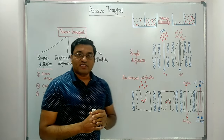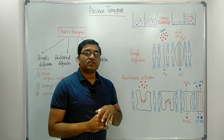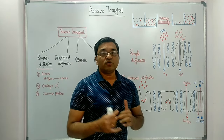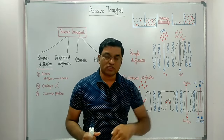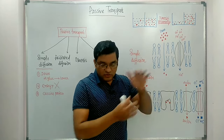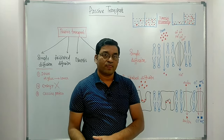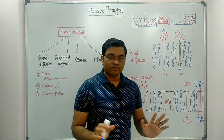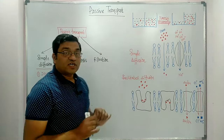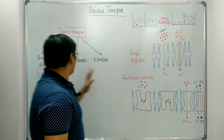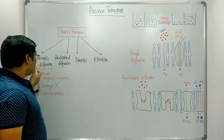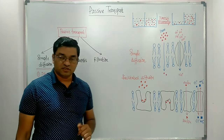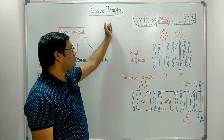What is the meaning of Passive Transport? Passive Transport means transport of molecules across the membrane down the concentration gradient — from higher concentration to lower concentration. Energy is not required for this process. Passive Transport is divided into four main types: Simple Diffusion, Facilitated Diffusion, Osmosis, and Filtration.